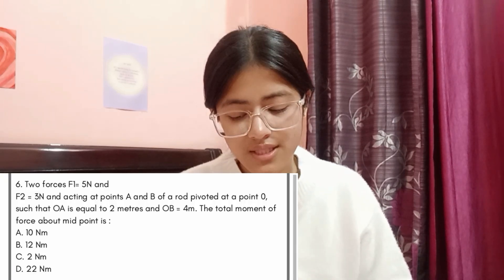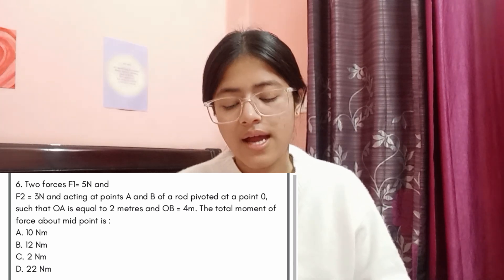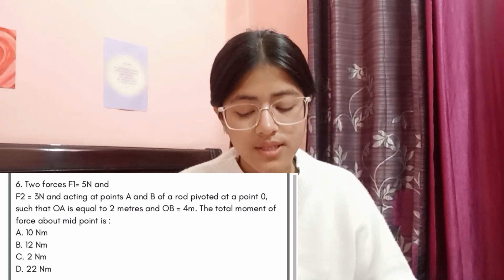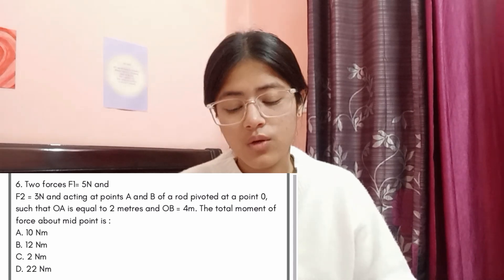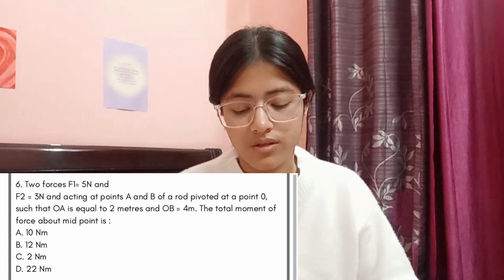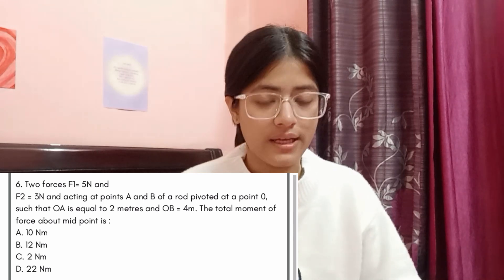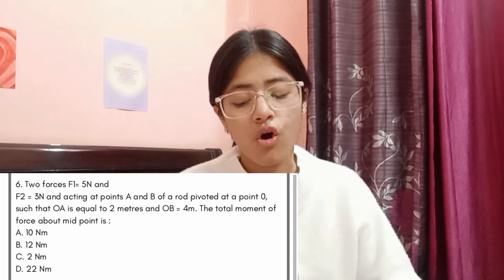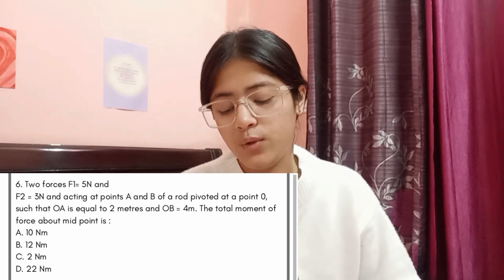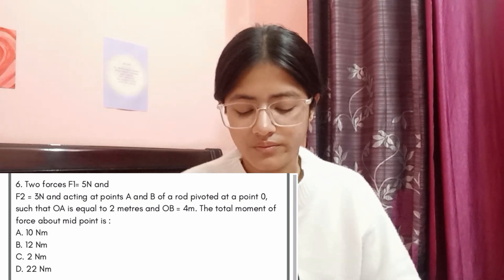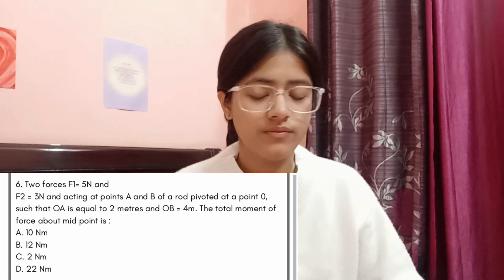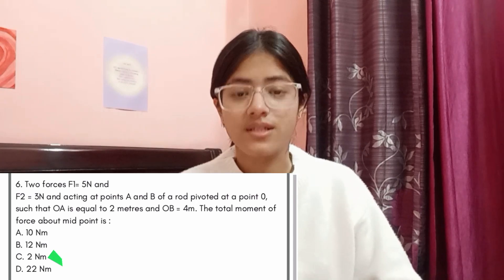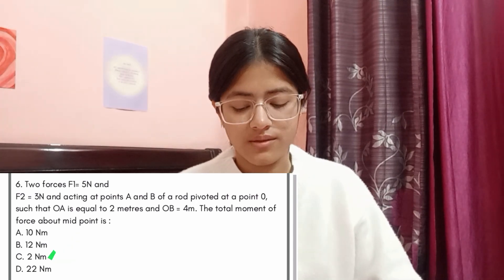Question 6 is a small numerical: two forces F1 = 5 N and F2 = 3 N acting at points A and B of a rod pivoted at point O, such that OA = 2 m and OB = 4 m. The total moment of force about the midpoint is — Option A: 10 N·m, Option B: 12 N·m, Option C: 2 N·m, Option D: 22 N·m. You can pause and solve. The answer is Option C, 2 Newton meters.